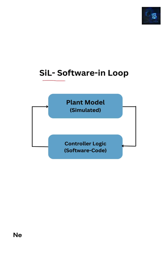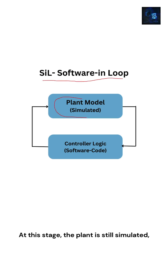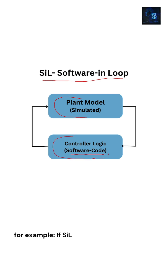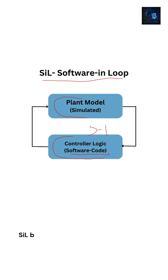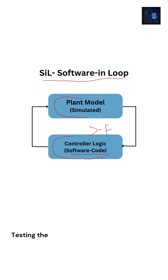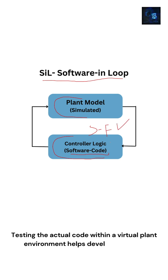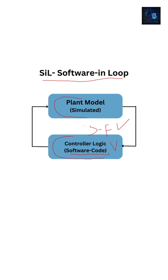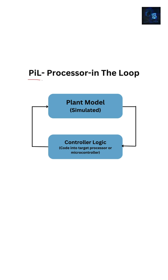Next we have Software in the Loop, or SIL. At this stage, the plant is still simulated, but the controller is now the actual software code that has been written and compiled. For example, if SIL is developed in Simulink, you will find S-functions inside the controller. SIL bridges the gap between theoretical design and practical implementation. Testing the actual code within a virtual plant environment helps developers catch software bugs, verify algorithm accuracy, and ensure that the code behaves as expected before it ever meets hardware.